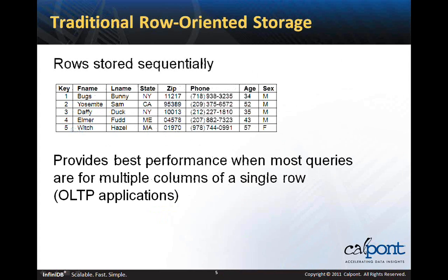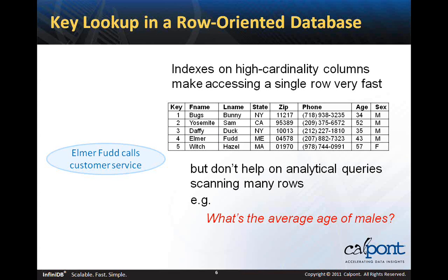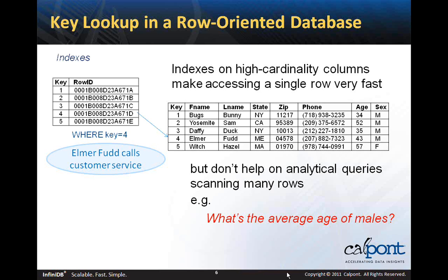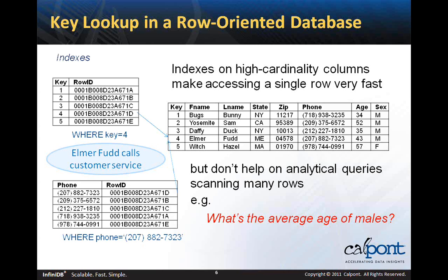In order to understand the differences you get with a columnar database, let's first review how traditional databases work. In a row-oriented database, rows are stored sequentially, with one row immediately following another. All the columns of a single row are stored together on the same page, assuming the row size is smaller than the page size. This provides great performance when you're querying multiple columns of a single row, as OLTP applications typically do. To facilitate locating a single row, you will typically create indexes on high cardinality columns, such as unique keys. So when Elmer Fudd calls your customer service center, he might have his account number, which lets you go directly to his record, or his phone number, which might narrow down your results to the few accounts that share that phone number.